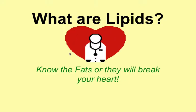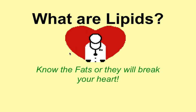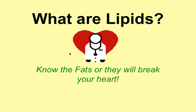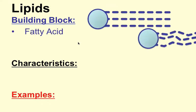So what are lipids? We're going to start with building blocks. The building block of a lipid is known as a fatty acid. Fatty acids are actually these little tails here hanging off the ends of these little circles.